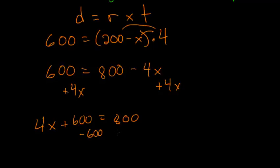Now subtracting 600, we get x on one side of the equation: 4x equals 200. Dividing each side by 4, we have x equals 50.